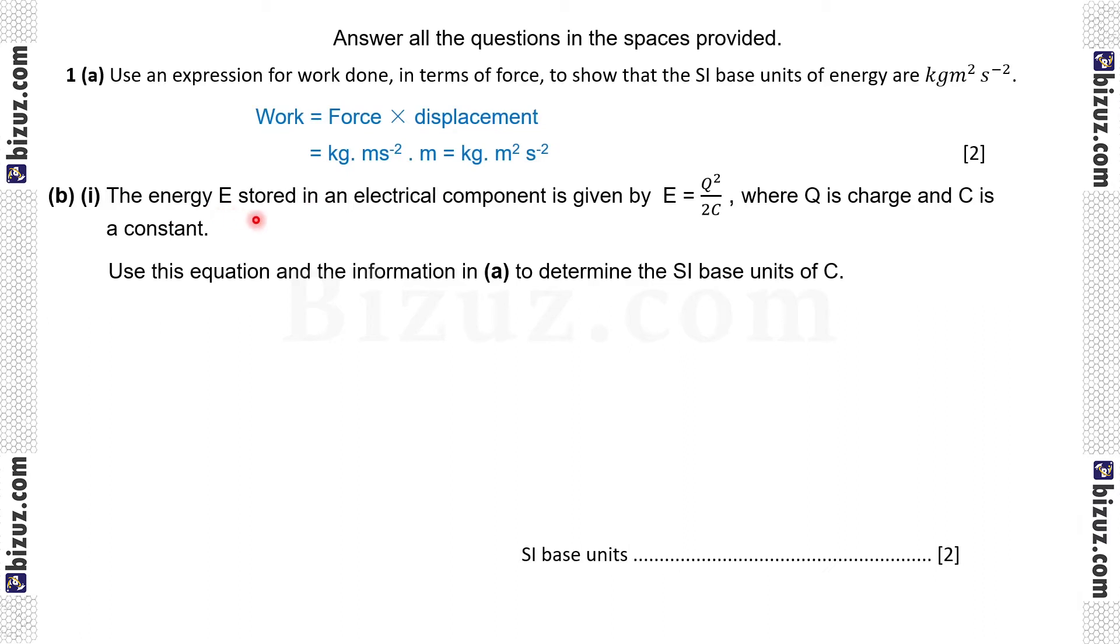1b1. The energy E stored in an electrical component is given by E equal to q square by 2c, where q is the charge and c is a constant. Use this equation and the information in A to determine the SI base units of c.